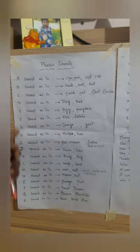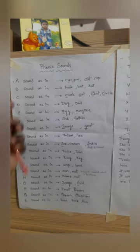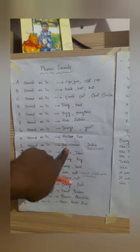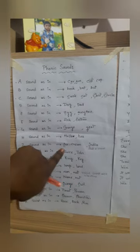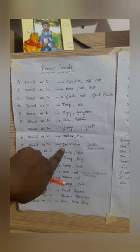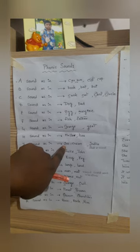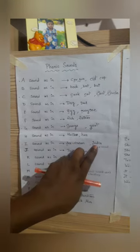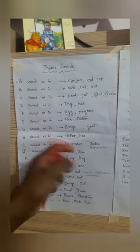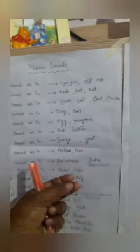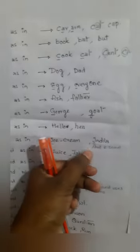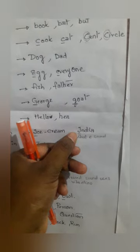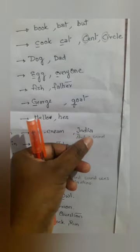As I said, these are the names A, B, C, D. The same way, in the word ice cream, we will give the name of the letter here — ice cream. But here in India, it gives a short 'e' sound — India.